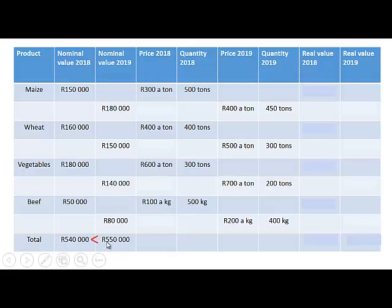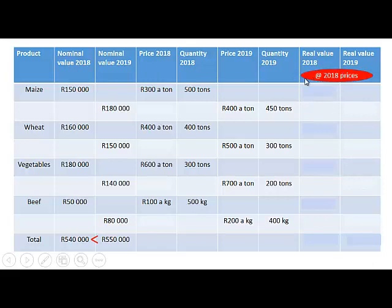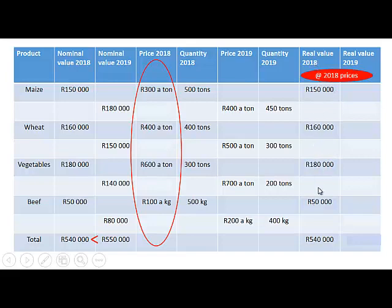So we can see that if we only look at the nominal values, it appears that more was produced in 2019 than in 2018. But we know that is actually due to the increase in prices, since the amounts produced were less in 2019 than in 2018. To see the real increase in production, we have to use fixed prices — the 2018 prices. For 2018, the real value will equal the nominal value because we are using the same prices.